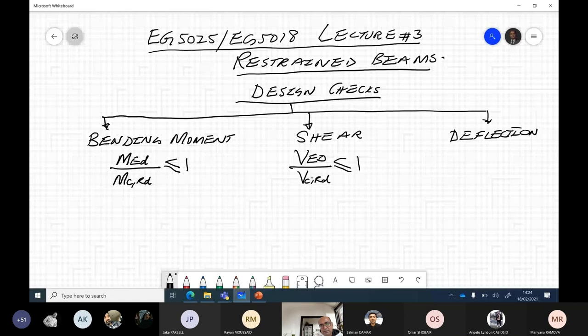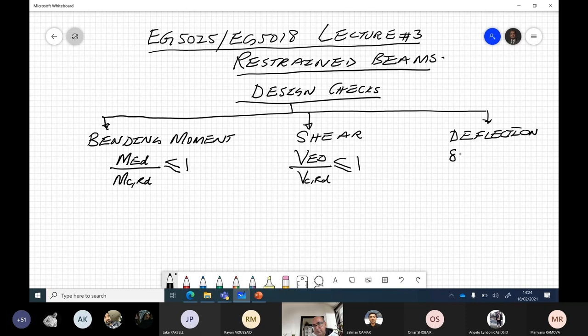V_ED is applied shear and V_C,RD is the shear resistance of the section.